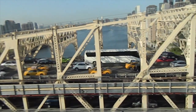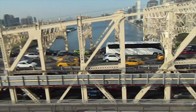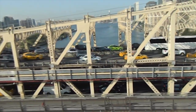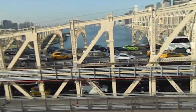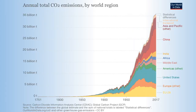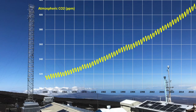Burning fossil fuels is a one-way process. When humans burn gas, oil, and coal to power our society, we release CO2 to the atmosphere. But we have no compensating activity that takes it back out, so the amount of CO2 increases every year.